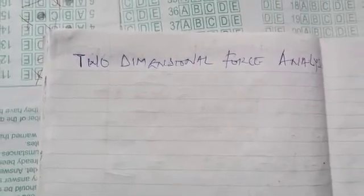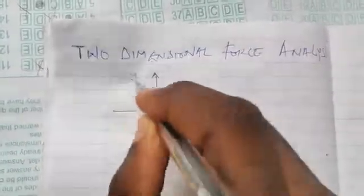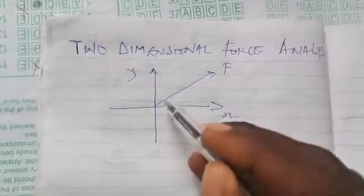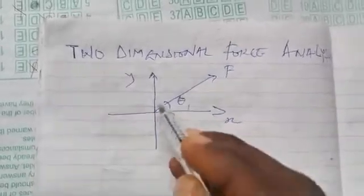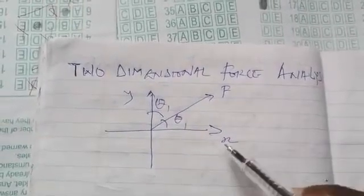Welcome to Engineer's Mindset. I will be taking you through the first series of this channel, which is applied mechanics. We're going to start with two-dimensional force analysis. A force is said to be a two-dimensional force when it exists between the X and Y Cartesian coordinate system. For instance, I have my graph — this is my Cartesian coordinate system, this is my X, this is my Y — and I have a force F. This is called a two-dimensional force because it makes an angle; let's call this angle theta 1 and this angle theta 2. So a two-dimensional force is a force that appears between the X and Y coordinate system making an angle either to the horizontal or to the vertical.